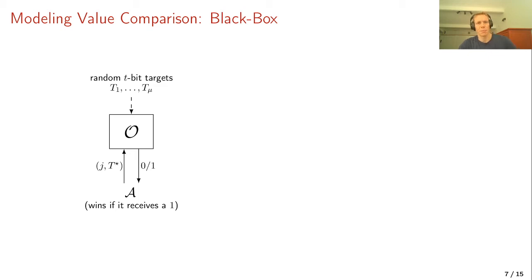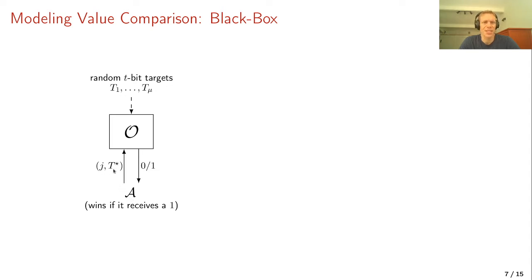Consider the following security game: we have an oracle O given mu random t-bit targets t1 to t_mu. An adversary A plays a game with the oracle, making queries of the form (j, t*) and receiving a zero or one back — one if verification succeeds and zero otherwise. The attacker wins if it ever receives a one. That is the typical security model for black box value comparison.